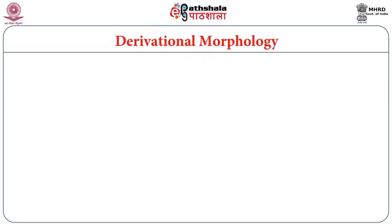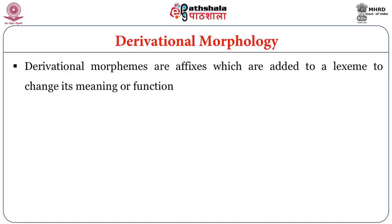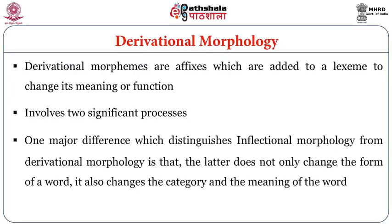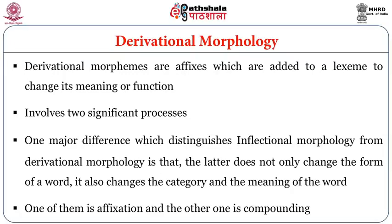Now we come to derivational morphology. Derivational morphemes are affixes added to a lexeme to change its meaning or function. One major difference distinguishing inflectional from derivational morphology is that derivation does not only change the form of a word — it also changes the category and the meaning of the word. Derivational morphology involves two significant processes: affixation and compounding.